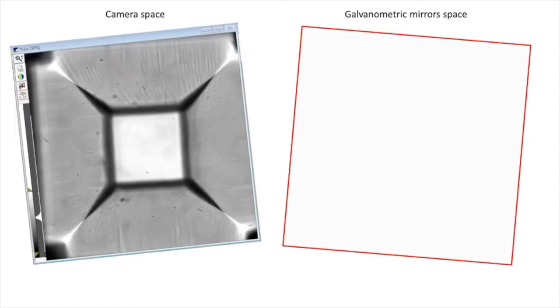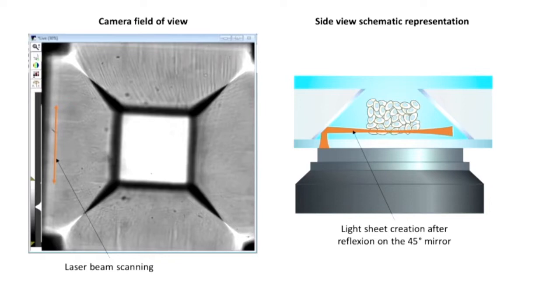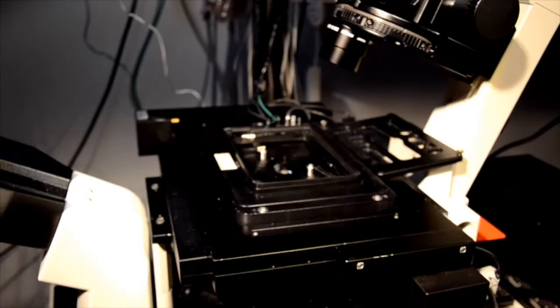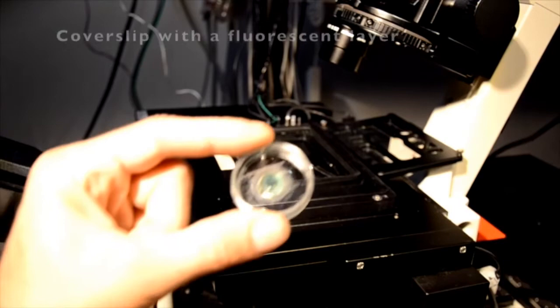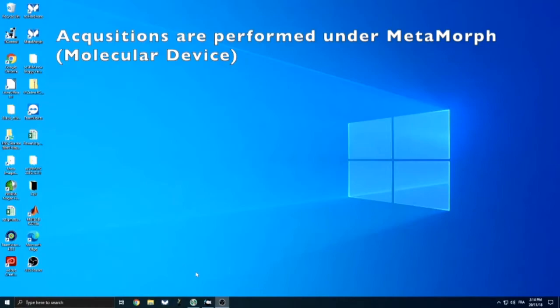A first calibration has to be done in order to superpose the galvanometric mirror space onto the camera space. This is mandatory to accurately control the laser beam position in the image plane and thus onto the 45-degree mirror to create our light sheets. This calibration is stable for months and only needs to be repeated when hardware such as the camera, the objective, or the filter cube has been moved. For this calibration step, we use a coverslip with a fluorescent layer on it, simply made with a fluorescent marker located on our stage holder.